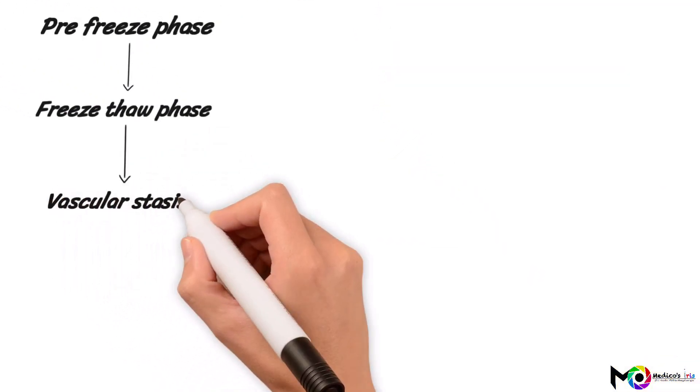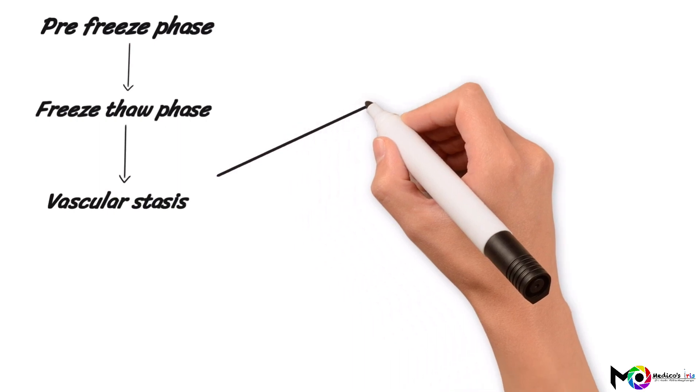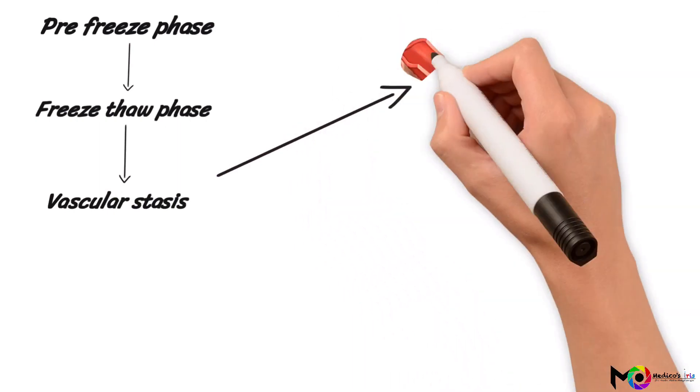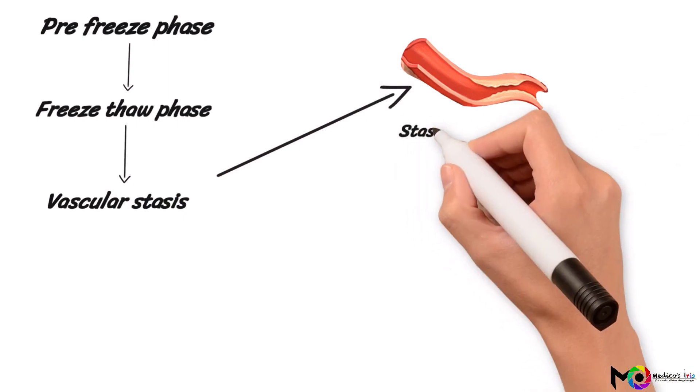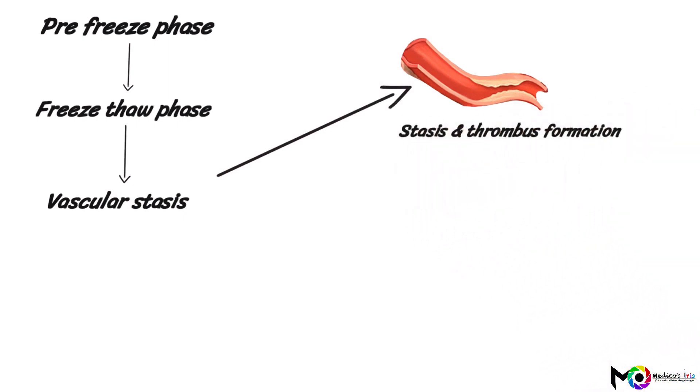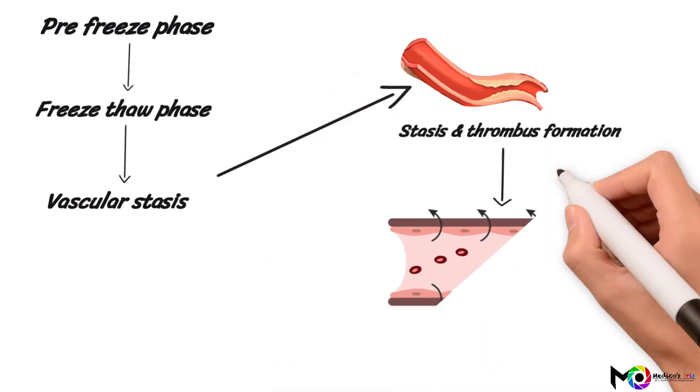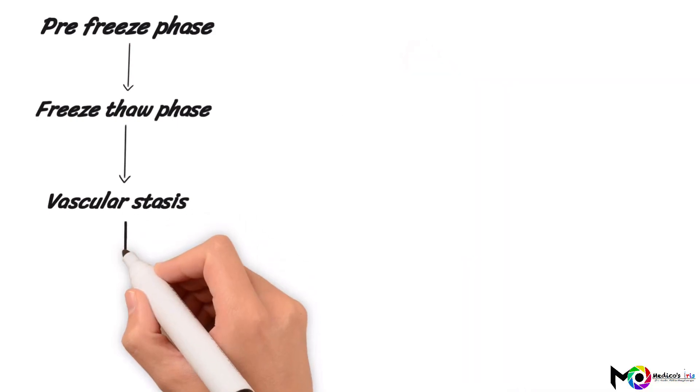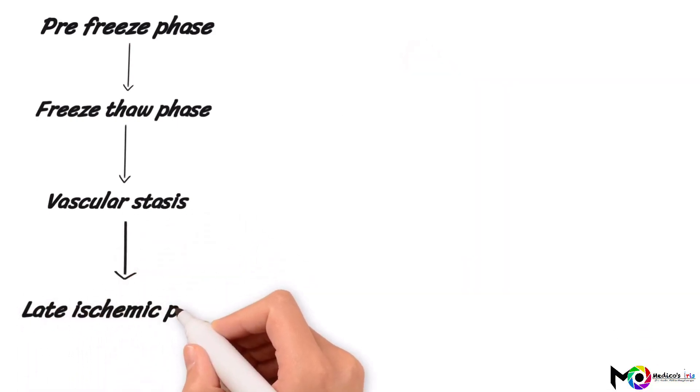Then the vascular stasis phase comes. This happens after hours of exposure to sub-zero temperatures. This phase is marked by further stasis of blood and thrombus formation. Due to cell dehydration and intracellular ice crystallization, capillary cell disruption happens and blood leakage occurs.